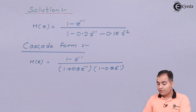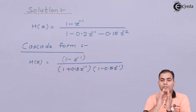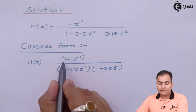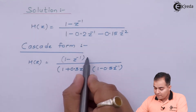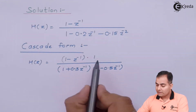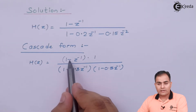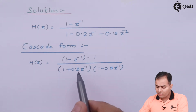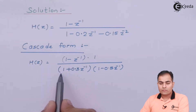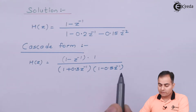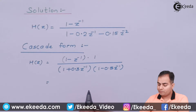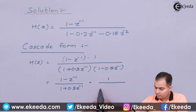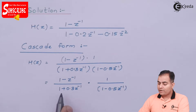Once we have the factors, we separate the numerator and denominator to form two different transfer functions. The numerator has one factor: (1 - z⁻¹). Multiplying by 1 gives the second factor. We keep (1 - z⁻¹) with (1 + 0.3z⁻¹) for the first transfer function, and 1 with (1 - 0.5z⁻¹) for the second, giving us two different transfer functions.